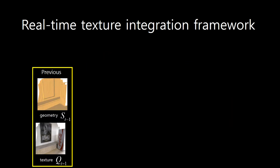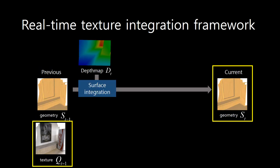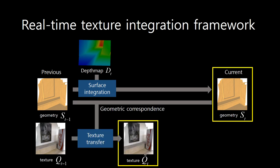In order to update geometry and texture, we first integrate the current depth value into the previous geometry, yielding the current geometry. Since the current geometry is updated, the previous texture is not valid for the current geometry. So, we transfer the previous texture map to the current geometry by using the geometric correspondences between the current geometry and the previous geometry.